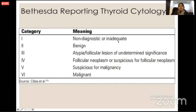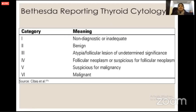The non-diagnostic or inadequate category is very important because you don't want to miss a lesion. We know you need to have seven to eight well-visualized nuclear features and cell clusters in a sample. If they are not there, it goes as non-diagnostic. If I only have colloid with no epithelial follicular cells visible, that is also non-diagnostic.